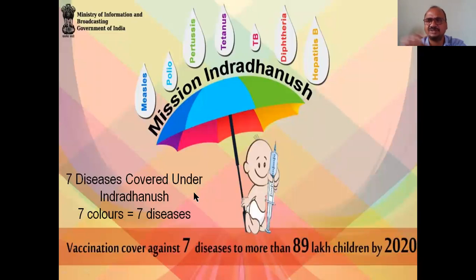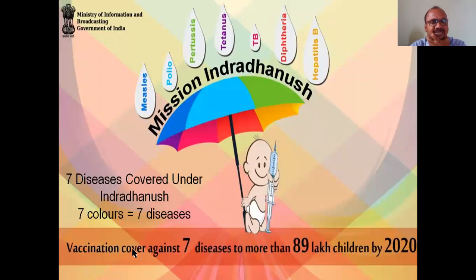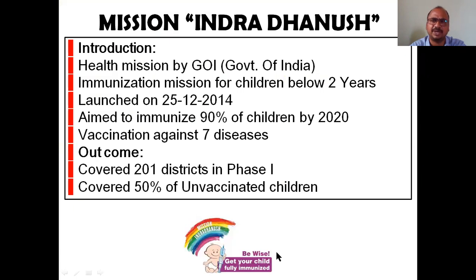Mission Indradhanush - 'Indradhanush' means rainbow, which has seven colors. This is especially for children, covering seven diseases equal to seven rainbow colors: measles, polio, pertussis, tetanus, TB, diphtheria, and hepatitis. Vaccination acts like an umbrella against all seven diseases. It covers more than 89 lakh children by 2020. This program has appeared multiple times in IAS examinations.